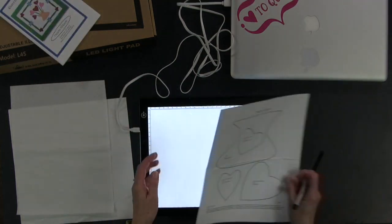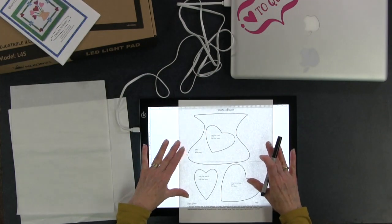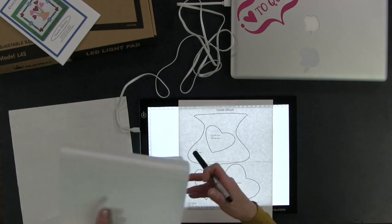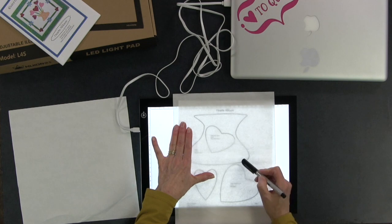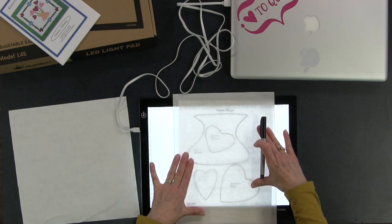I take my pattern piece, my applique pieces I want to trace, and put them on the light table. I have a sheet of Steam-A-Seam right now and I put it over top. You can see I could trace very easily. I can see all those things quite easily.